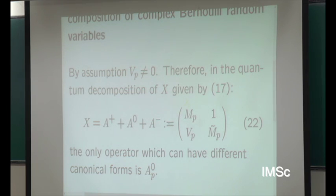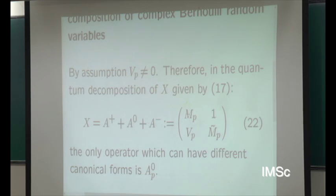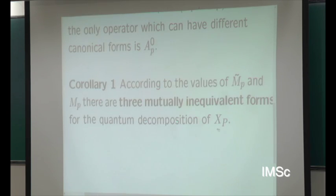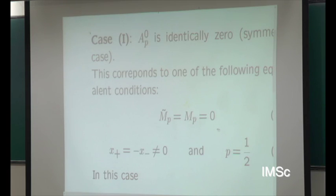The three canonical forms correspond to: both M_P and M̃_P equal to zero (symmetric case); M_P zero but M̃_P not zero; M_P not zero and M̃_P zero; and the generic case where both are not zero. Let us see what the canonical forms are correspondingly.